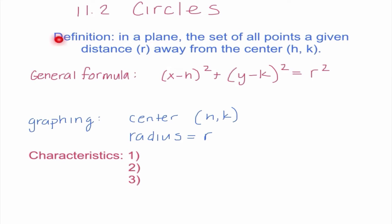So we're going to start with our definition here. Our definition of a circle is in a plane, the set of all points a given distance, which we call r (r represents our radius), away from the center, which is h and k. So basically it means that we have a center and a circle has a radius that is a specific distance, and all the points on the circle are that distance away from the center. So the general formula that we're going to see, and we definitely should have this memorized, is (x-h)²+(y-k)²=r².